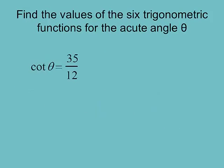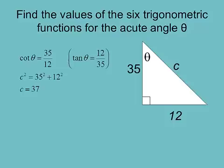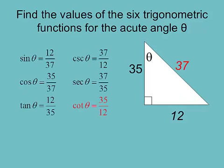This time cotangent = 35/12. Since I'm not confident with reciprocals, I'll flip it to get tangent = 12/35, and build my triangle using that. Tangent = opposite/adjacent = 12/35. Using Pythagorean theorem, the hypotenuse comes out to be 37. Now with three sides: sine = 12/37, cosine = 35/37, tangent = 12/35, and the three reciprocals. Notice cotangent works out to be the same as what was given — a nice check.